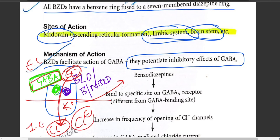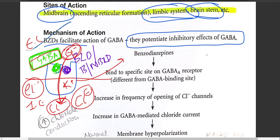When benzodiazepines are present, there is increased opening of chloride channels, increased chloride conduction intracellularly, which leads to CNS depression. That is the main mechanism of action.